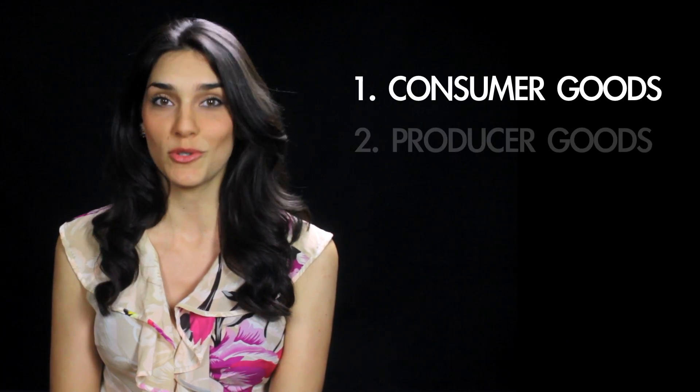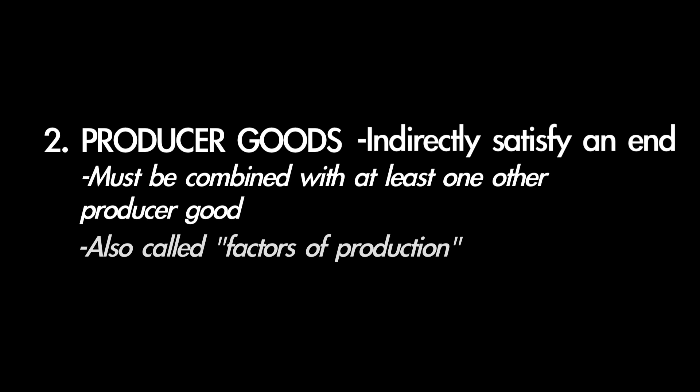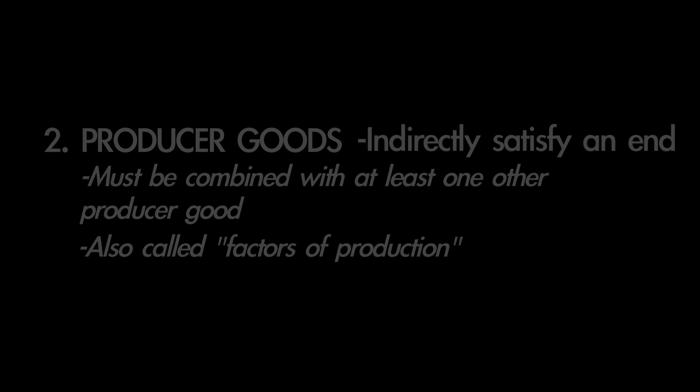The means we use to satisfy our ends we call goods. We can classify goods into two main categories: consumer goods and producer goods. Consumer goods are those goods that are used directly by an actor to satisfy an end. Producer goods are those factors which are combined with at least one other factor to create a definite quantity of a consumer good. For example, a ham sandwich is a consumer good — you eat the ham sandwich to directly satisfy your hunger. The bread, ham, and labor you employ to produce the ham sandwich are the producer goods or factors of production.